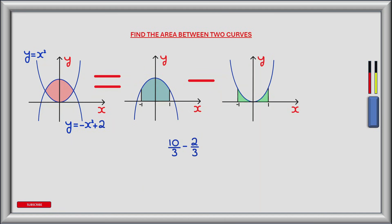And so the area of the red shaded region is the area of the blue shaded region, which we've calculated as 10 divided by 3, minus the area of the green shaded region, which we've calculated as 2 thirds. And so the area of the red shaded region is equal to 8 divided by 3. And this is our final answer.